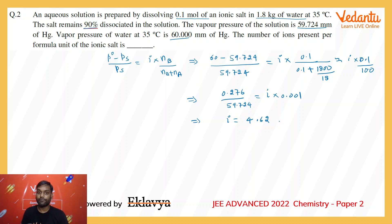n is something which we are looking for - it represents the number of ions in the formula unit. Alpha is the degree of dissociation, which is given as 0.9.